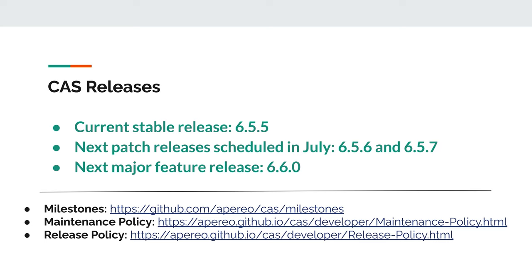At the same time, the major development work has been happening towards the next major feature release, which will be labeled as 6.6.0, with several release candidates already available for a test drive. The general availability release for version 6.6 is scheduled towards the end of July of 2022. Here you could see and visit the links for CAS milestones, its maintenance policy and release policy.